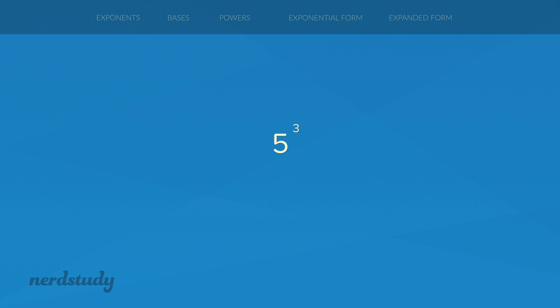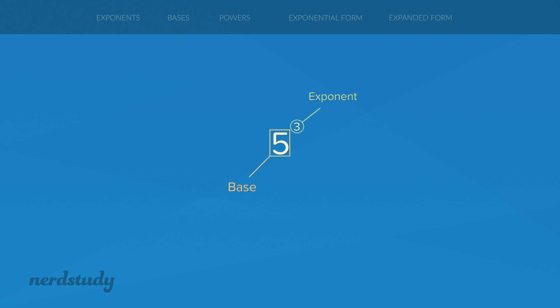Now instead of saying big number or small number, there are actual mathematical words for these things. The big number is something we call the base. The small number up here is something we call the exponent. And when you look at the base and the exponent put together, we call all of that a power.